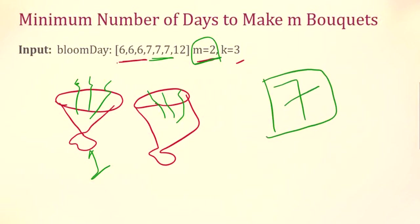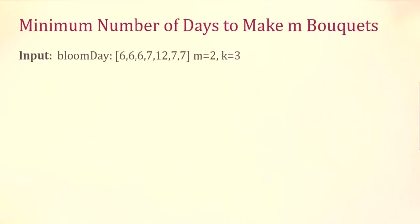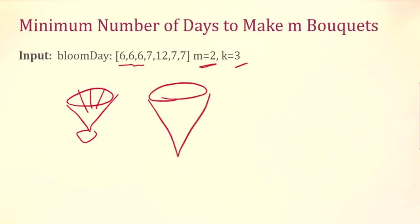Consider the next example, which is very similar: we have to make two bouquets, each with three adjacent flowers. We wait six days to make our first bouquet of three flowers. Now for the second bouquet, if we wait one more day, on the seventh day one flower will bloom, but the adjacent flower to it will bloom only on the twelfth day. So we cannot use this to make a bouquet because we need k adjacent flowers.